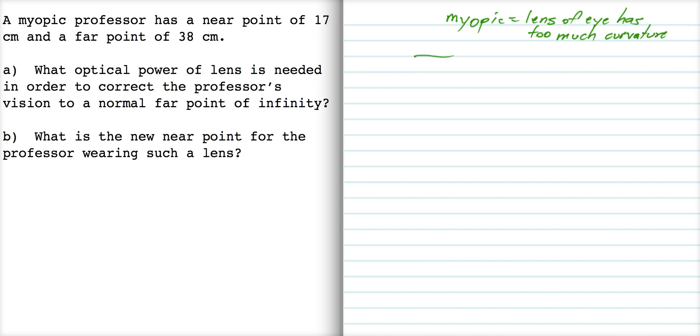That means that light that comes in from a distance and it comes in parallel, it hits the eyeball and it comes to a focus too quickly before it reaches the retina back here.